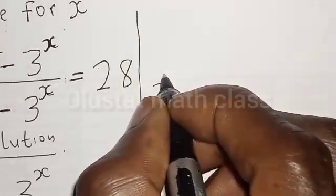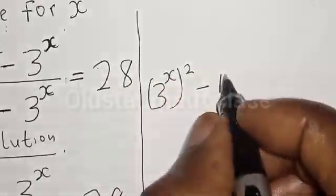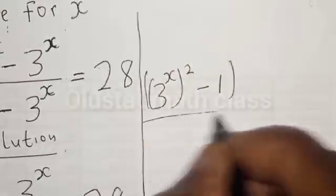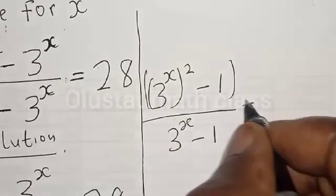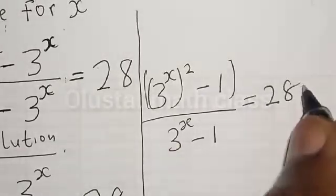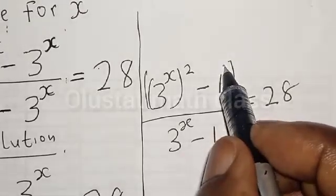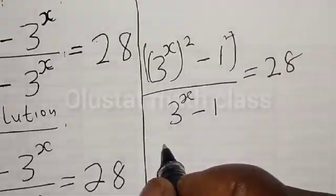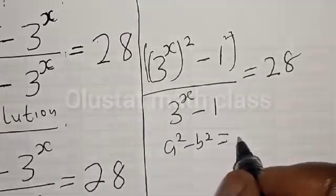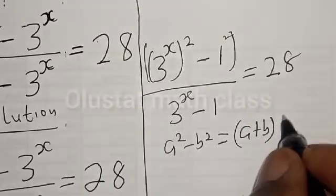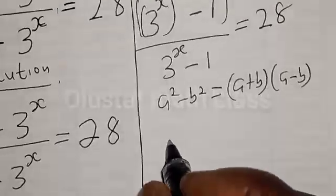So this becomes 3 raised to power 2s minus 1, divided by 3 raised to power s minus 1, equal to 28. We have 3 raised to power 2s minus 1, and the same as 1 squared, so that is a difference of two squares. If you have A squared minus B squared, that equals A plus B multiplied by A minus B.